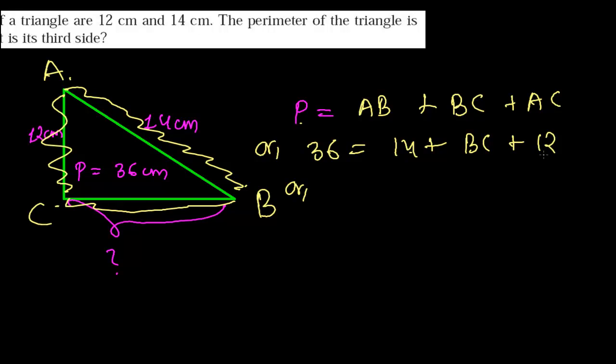which is 26. So 26 plus BC equals 36. I'm just rearranging—initially it was 14 plus BC plus 12. So this whole part is on the right side. Now I'm putting it on the left side.